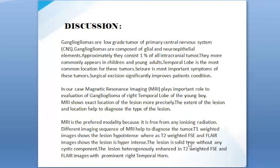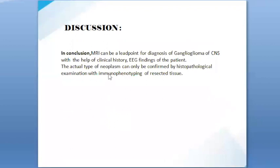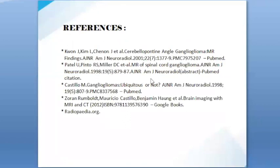MRI is the preferred modality because it is free from ionizing radiation. Different MRI sequences help diagnose the tumor: T1-weighted images show the lesion as hypointense, while T2-weighted FSE and FLAIR images show the lesion as hyperintense. The lesion is solid type without any cystic component, and enhances heterogeneously on T2-weighted FSE and FLAIR images with prominent right temporal horn. In conclusion, MRI can be a lead point for the diagnosis of ganglioglioma of the CNS. Combined with clinical history and EEG findings, the actual type of neoplasm can only be confirmed by histopathological examination with immunophenotyping of the resected tissue.